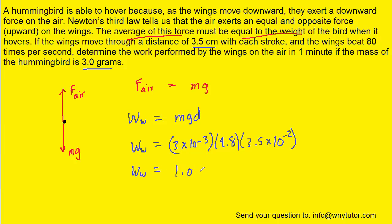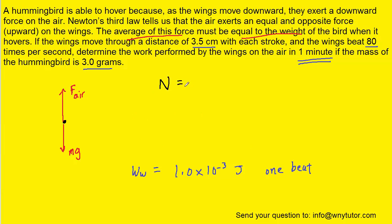And when we plug in and solve, we can see that the work done by the wing is 1 times 10 to the minus 3 joules. Now that is the work done during one beat of the wing. We're being asked to calculate the work done overall in one minute, so we're going to have to consider how many times per minute the bird beats the wing.